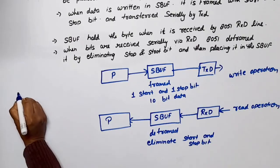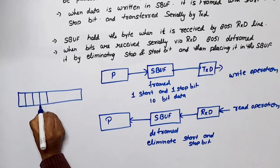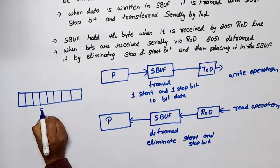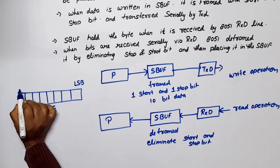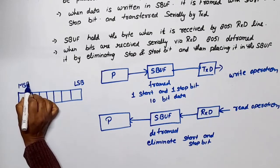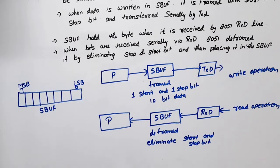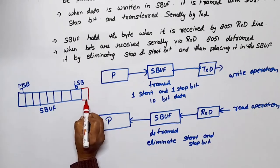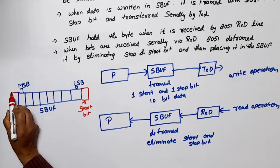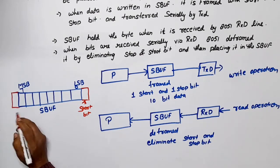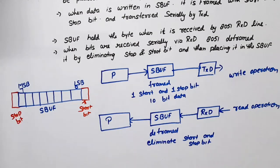Looking at the structure of the serial buffer register: it holds 8 bits. This is the SBUF register, where bit 0 is the LSB and bit 7 is the MSB. When the data is framed, a start bit is added at one side and a stop bit is added at the other side. This is the function of the serial buffer.